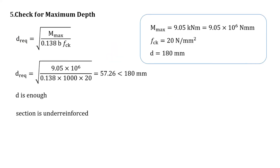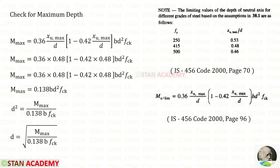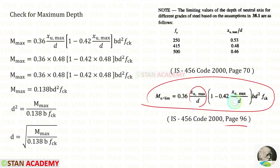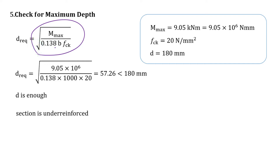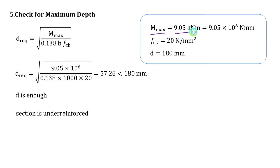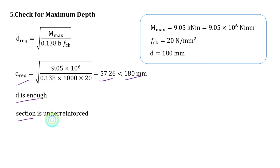Now we have to apply the check for the maximum depth. From page number 96 of IS 456, we can find this formula. Here, instead of xu_max upon d, we apply 0.48. Doing so, we can derive the formula. In the formula we apply unit breadth of 1 meter, that is 1000 millimeter. We convert the moment to newton millimeter by multiplying by 10 to the power 6. After calculation, we will get 57.26 millimeter. But the designed depth is more than that, so the effective depth d is enough and the section is under-reinforced.